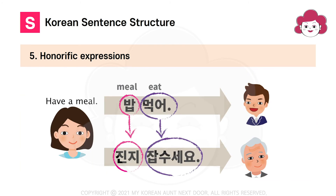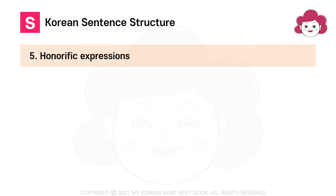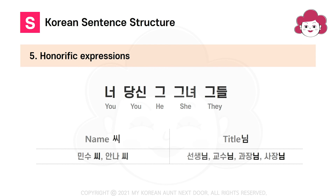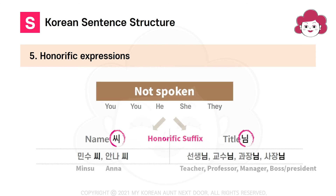This influences the words being used in the sentence. Also, pronouns for subjects such as 너, 당신, 그, 그녀, and 그들 are usually not spoken. Instead, names and titles with suffixes are being used.